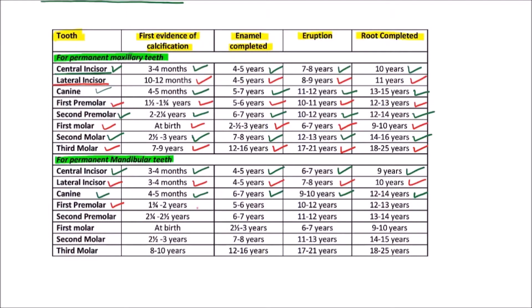For the mandibular first premolar, the first evidence of calcification occurs by 1¾ to 2 years, enamel is completed by 5 to 6 years, eruption occurs by 10 to 12 years, and the root is completed by 12 to 13 years.